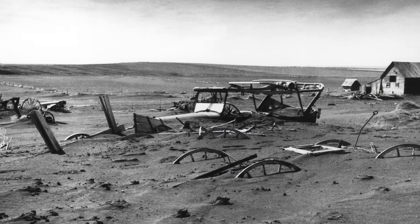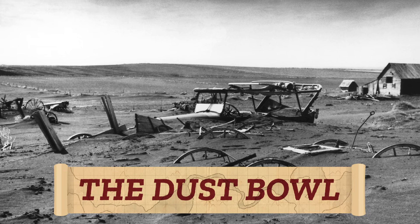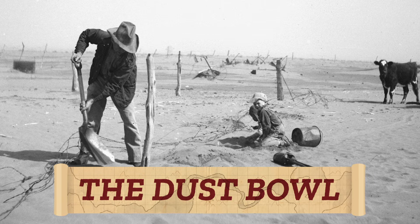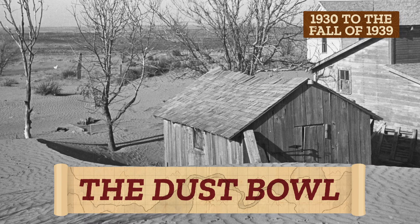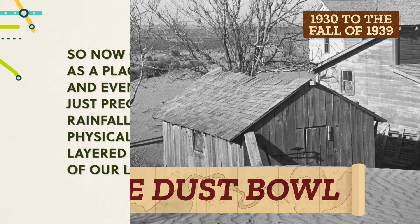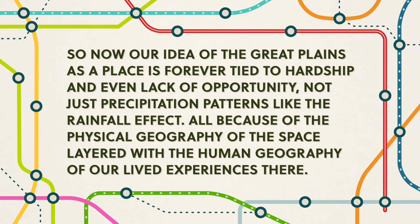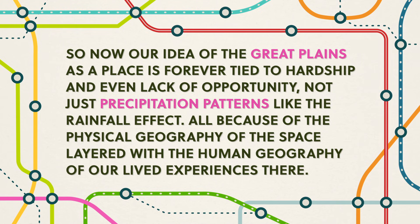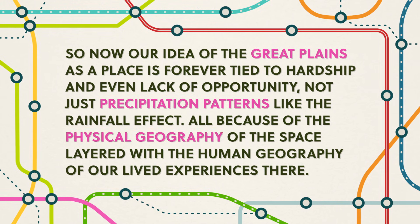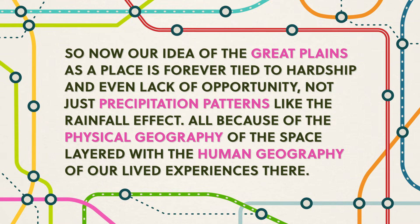One of the most significant droughts in the last century was the Dust Bowl, which ravaged the Great Plains for nearly a decade from 1930 until the fall of 1939, when the rains finally came. So now our idea of the Great Plains as a place is forever tied to hardship and even lack of opportunity, not just precipitation patterns like the rainfall effect — all because of the physical geography of the space layered with the human geography of our lived experiences there.